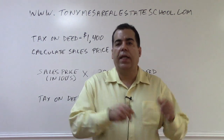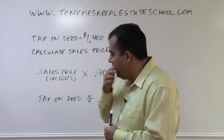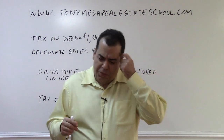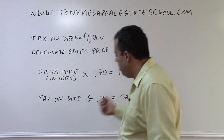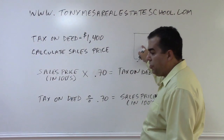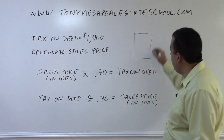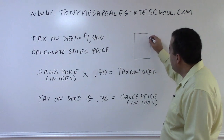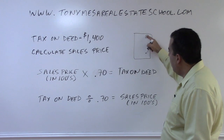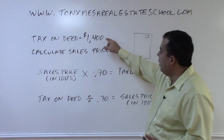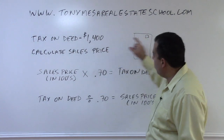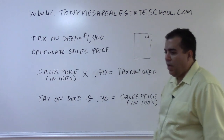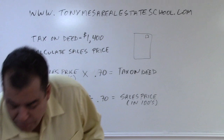In the old days, when you wanted to know what a property sold for, you didn't have the internet and public records databases. So you would go down to the public records and look at the actual deed. A deed a lot of times will not tell you the sales price, but it does tell you somewhere how much the tax on the deed is — how much tax was paid. So for example, a deed would tell you $1,400 was the amount of tax paid, and from that you would calculate the sales price of the property.